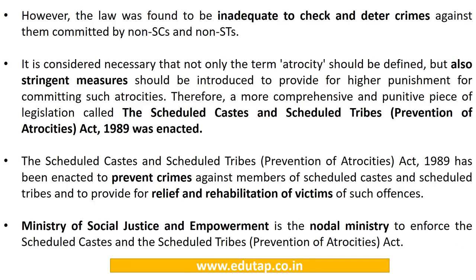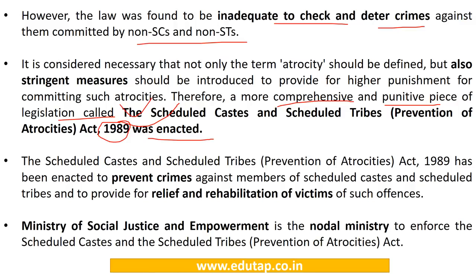The Protection of Civil Rights Act was found inadequate to check and deter crimes committed against Scheduled Castes and Scheduled Tribes. So a more comprehensive and punitive piece of legislation — the Scheduled Caste and Scheduled Tribes Prevention of Atrocities Act 1989 — was enacted. The Ministry of Social Justice and Empowerment is the nodal ministry responsible for its enforcement.